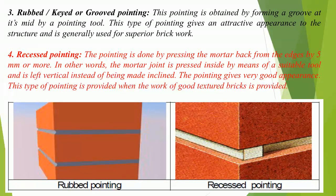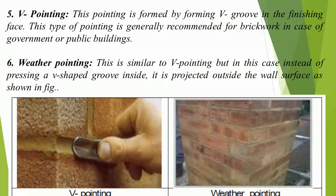4. Recessed pointing: The pointing is done by pressing the mortar back from the edges by 5 mm or more. The mortar joint is pressed inside by means of a suitable tool and is left vertical instead of being made inclined. This gives a very good appearance and is provided when good-textured bricks are used. 5. V-pointing: This pointing is formed by forming a V-groove in the finishing face and is generally recommended for brick work in government or public buildings.